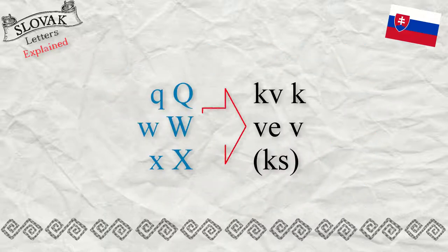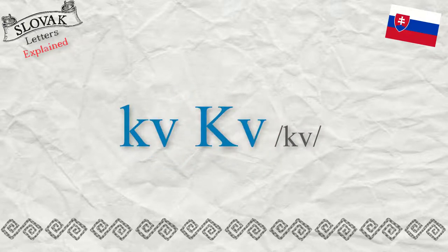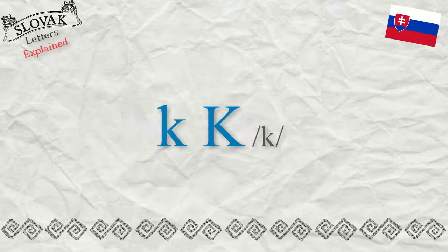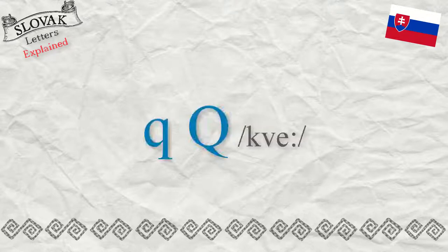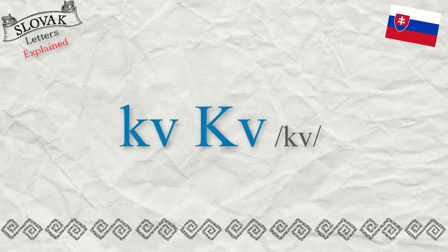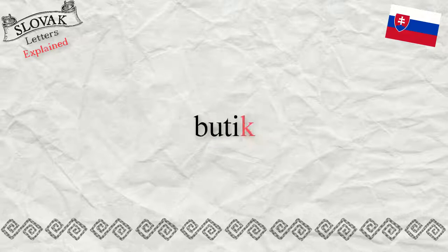In some words the spelling changes. For example, Q is spelled like KV, or just the letter K is used. A proper name like Quebec stays the same. But in other words, Q changes into KV — for example, quality becomes kvalita, quiz becomes kviz, and boutique becomes boutique.